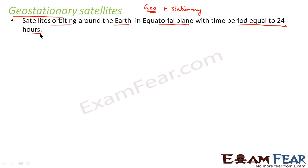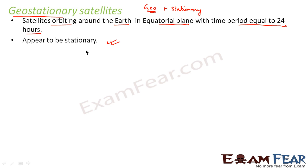These are the satellites which revolve around the earth with a time period of 24 hours, and they appear to be stationary with respect to the earth. Why? Because earth also revolves about its own axis with a time period of 24 hours. Since this satellite also rotates around the earth with a time period of 24 hours, and both are rotating at the same pace, it appears to something within the earth that this satellite is stationary — however it is moving, just because both of them are moving with the same time period.